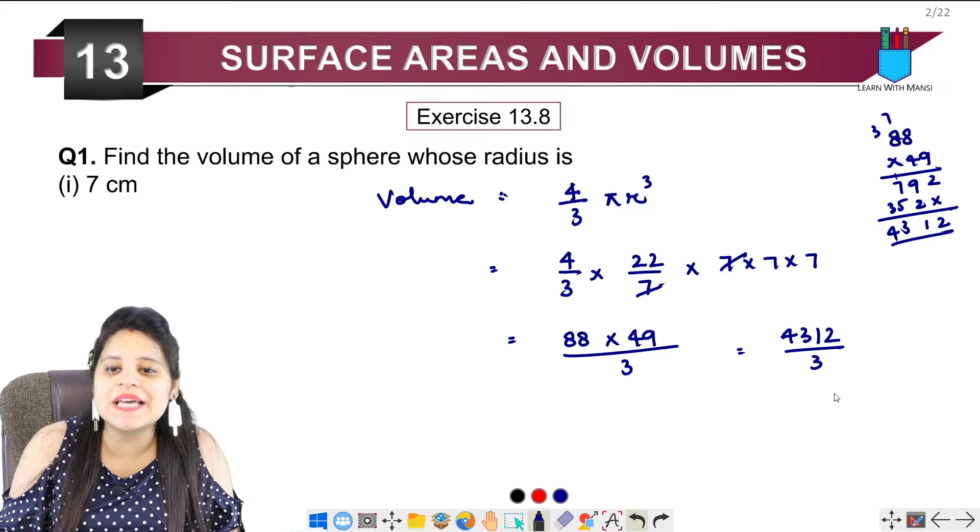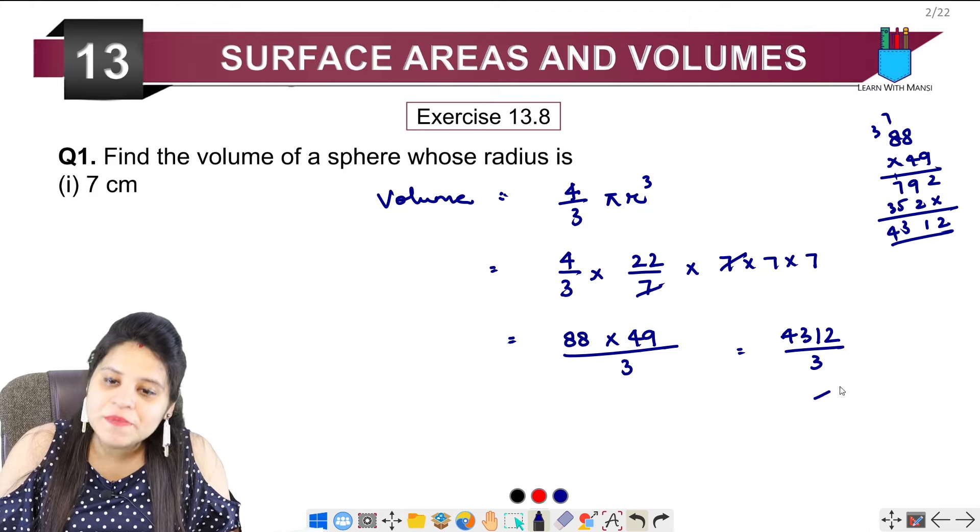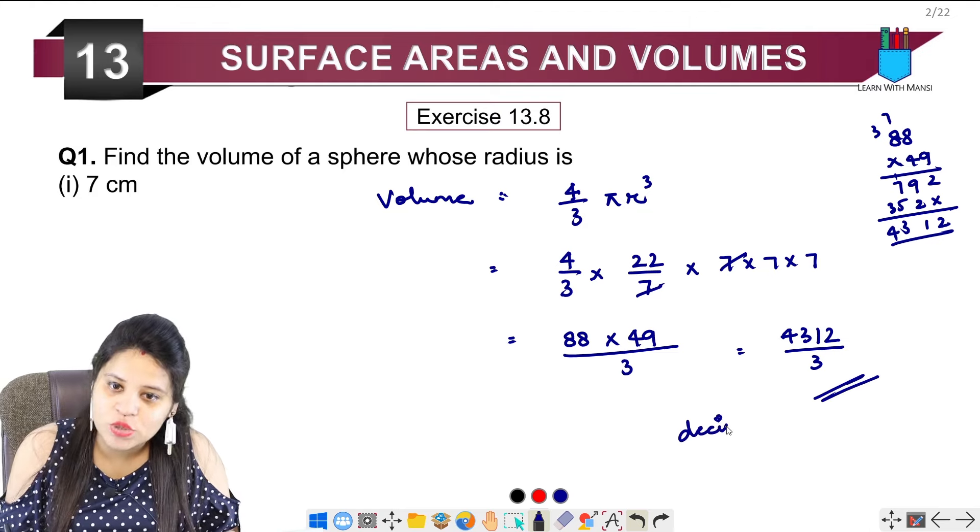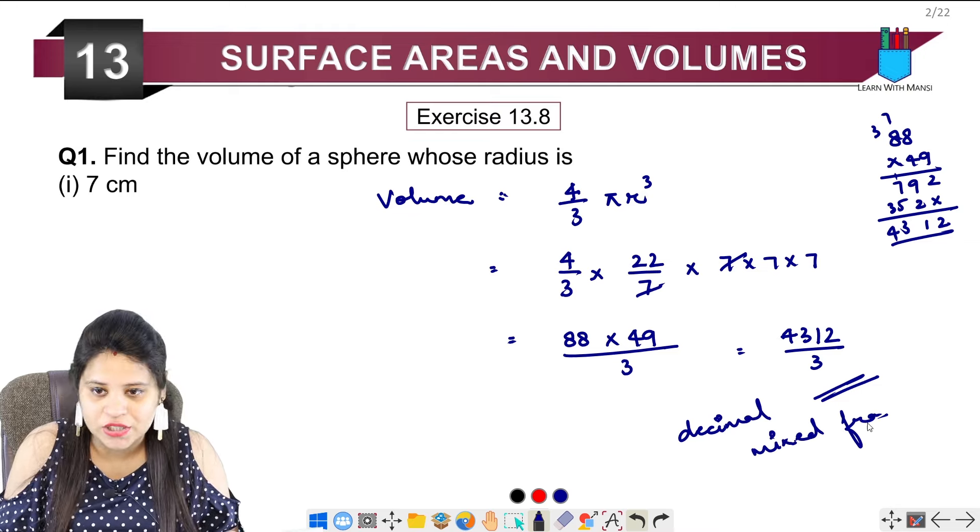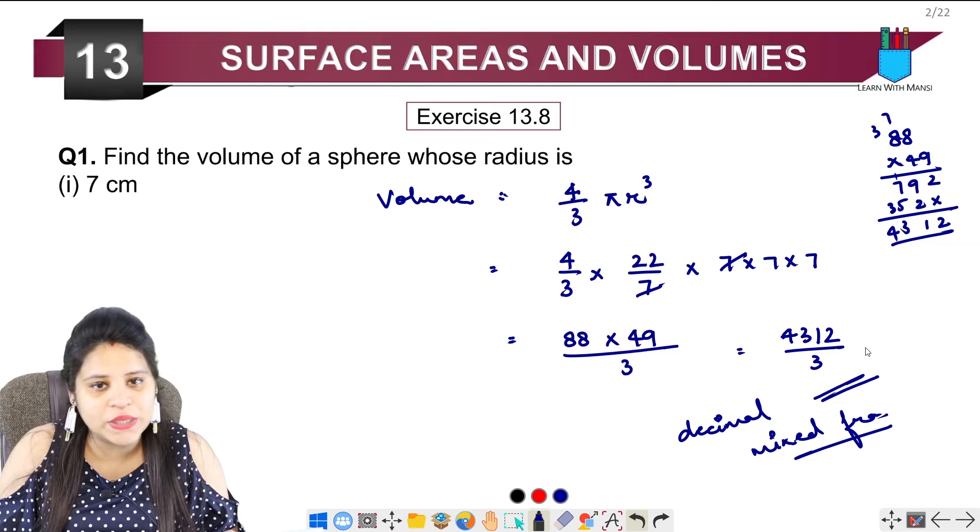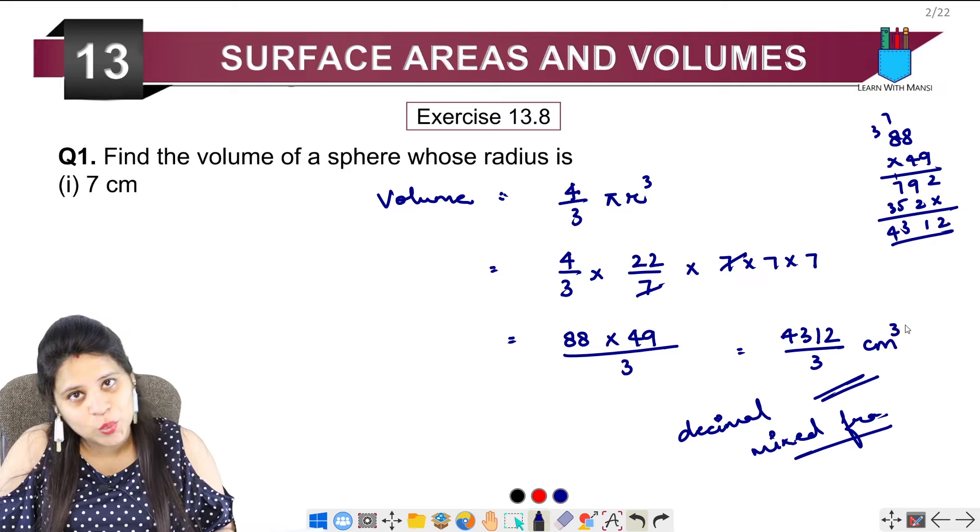This is 4312. Now here in this exercise, you will see that every time upon 3 will come. So you can leave the answer here. You can leave it in the decimal or you can leave it in the mixed fraction. So we have 2 options. This is our centimeter cube.